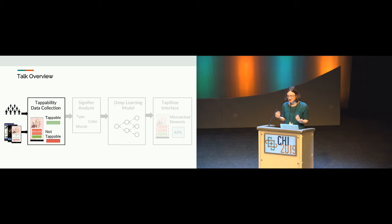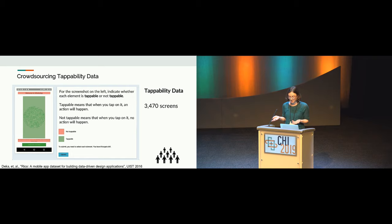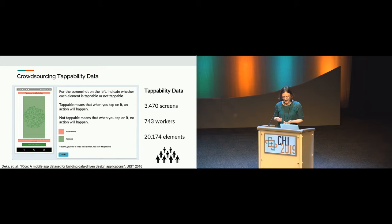We built an interface to let people label tappable and not tappable elements, and had people label 3,400 randomly selected screens from the RICO dataset, which was released a few years ago for data-driven design applications. We recruited 743 different workers through Amazon Mechanical Turk, and they labeled over 20,000 interface elements. We got these elements from the Android view hierarchies in the dataset, which contains the structure and interface elements, as well as a property defining whether an element is actually tappable in the application source code.